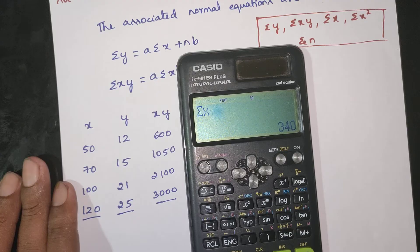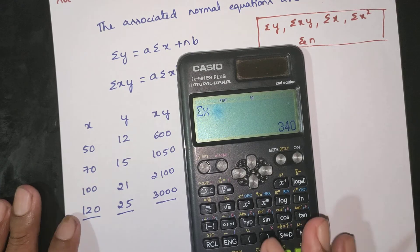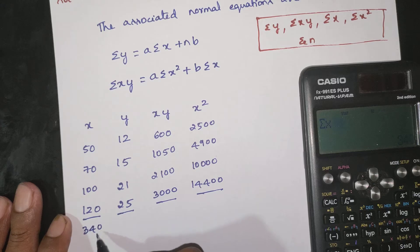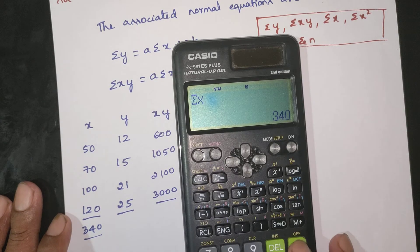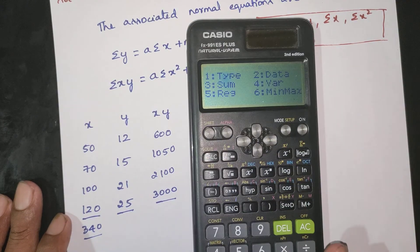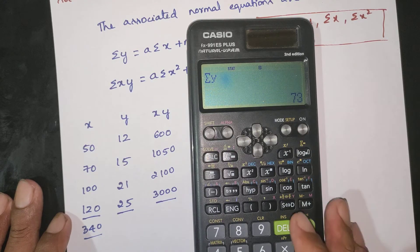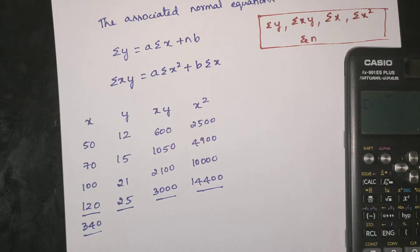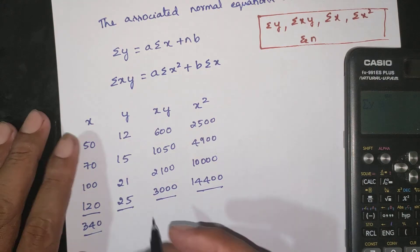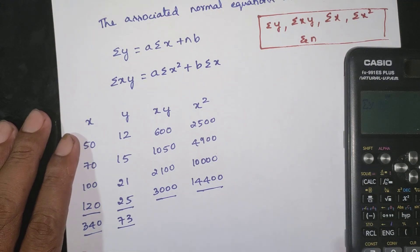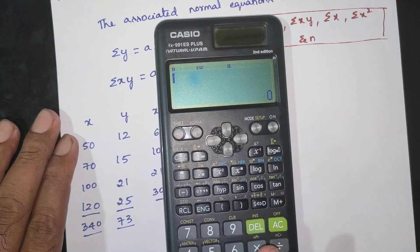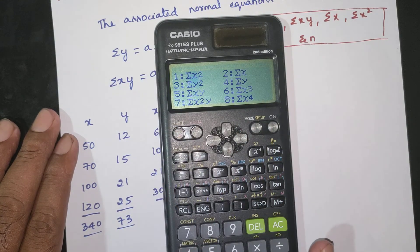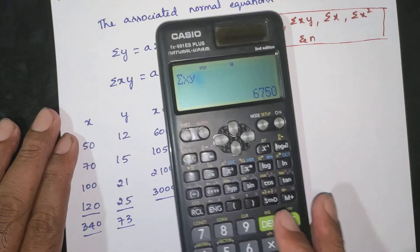Summation of x = 340. Summation of y = 73. Summation of xy = 6750. Summation of x squared = 31,800.